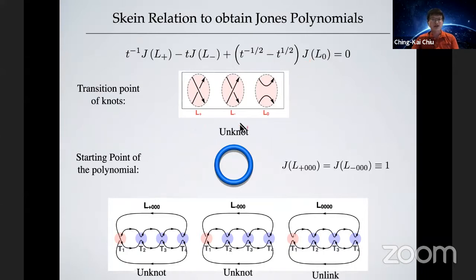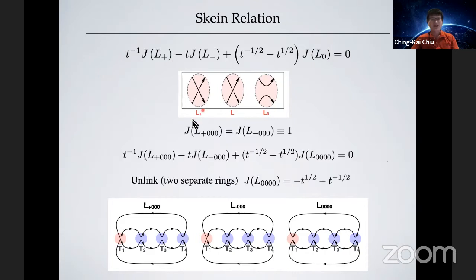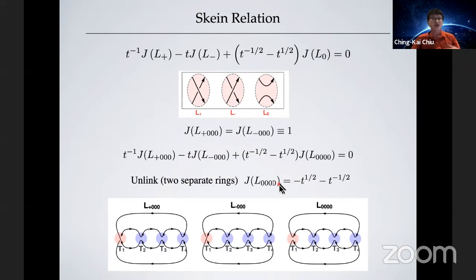As a starting point, we define the unknot — basically just a ring — and its Jones polynomial equals one. The first two diagrams just have a ring added, so their Jones polynomials should be one. The last case — the L-zero case — has separate rings, which is the unlink: two separate rings. From the skein relation we can derive the Jones polynomial for the unlink, and it looks like this.